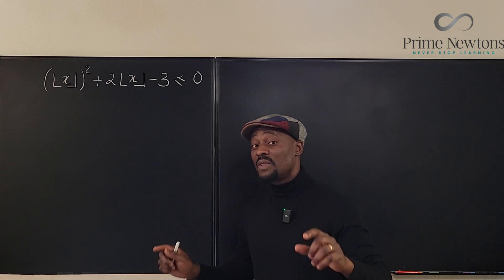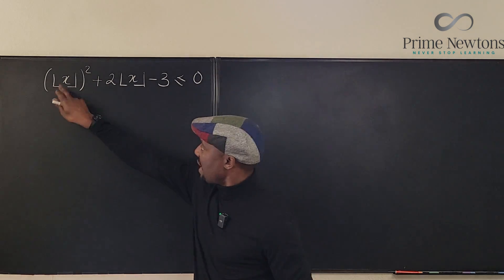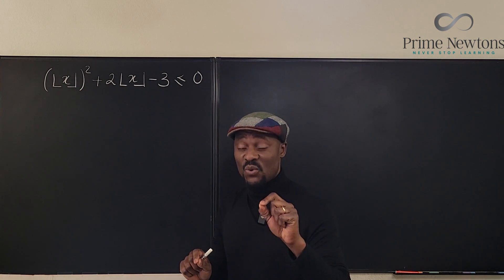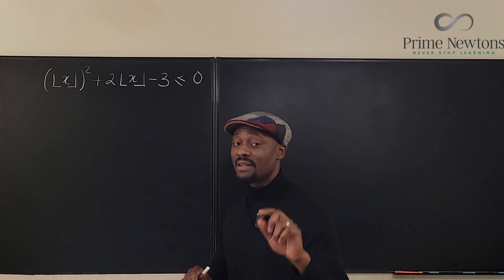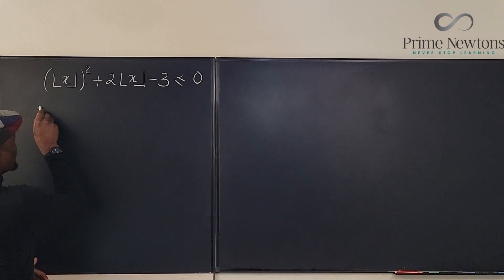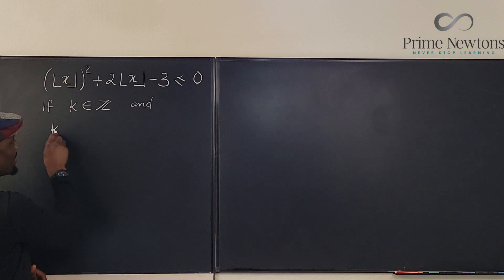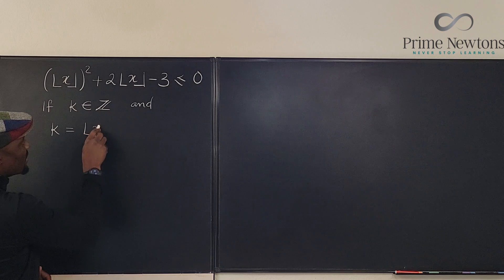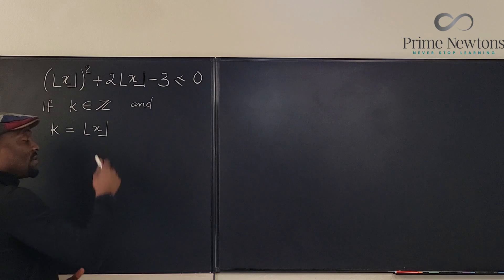As usual, we're going to start with the definition of the floor of X. The floor of X is always less than or equal to X, and X must be strictly less than the floor plus one. So we're gonna write the definition first. If K is an integer and K is equal to the floor of X, that's the meaning. K has to be an integer if it is the floor of X.